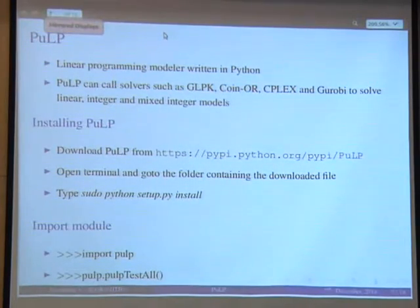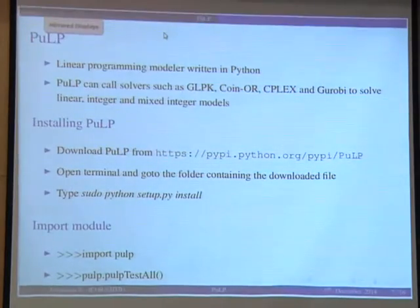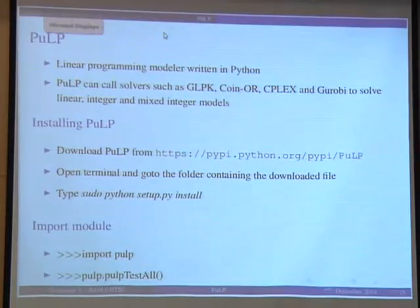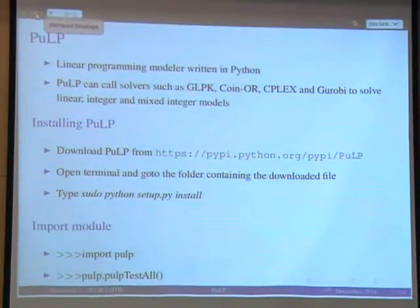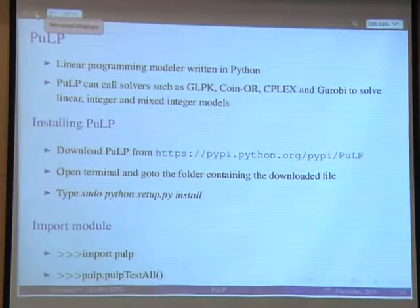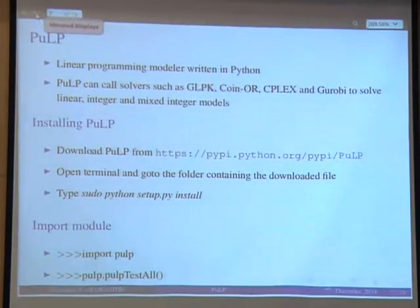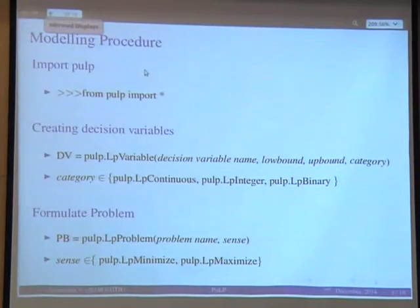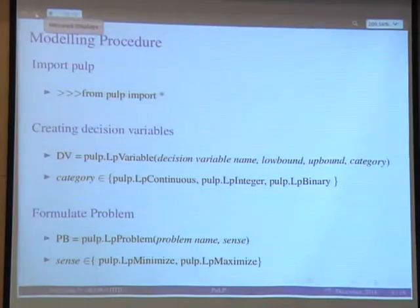PuLP is a linear programming modeler written in Python. It can call any solver — GLPK, COIN-OR — and also supports commercial solvers like CPLEX, which is free for educational institutions. It handles linear, integer, and mixed-integer problems. Nonlinear programming is not yet part of PuLP. To install it, go to the PuLP website and install it like any other Python package, then simply import PuLP as a module.